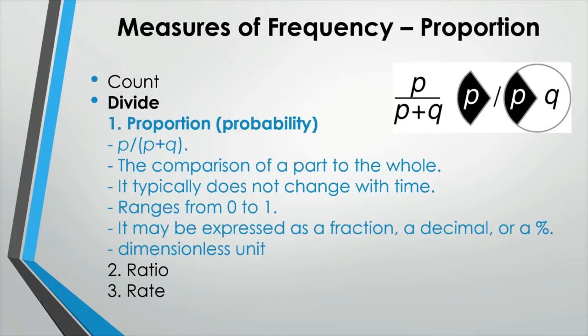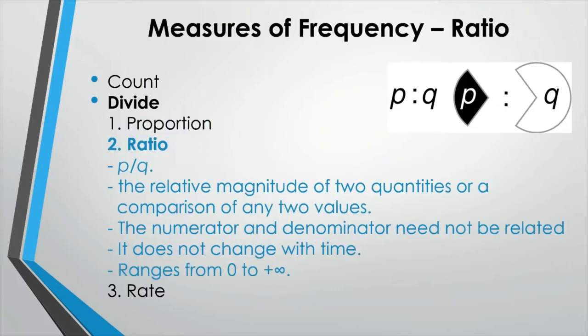This value is independent of time change, so there is no time information implied in proportion. Now the ratio is another value you can calculate by dividing two numbers. But this is different from the proportion in that the numerator is not necessarily a subset of the denominator, so the value can range from 0 to positive infinity. And as with proportion, this value does not change with time or imply any time information.